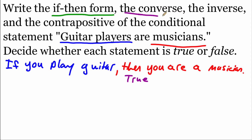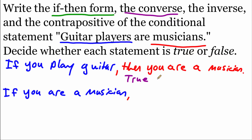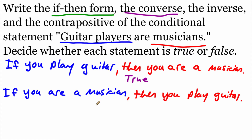For the converse, we switch the if and then pieces around, changing the order. So we would say: if you are a musician, then you play guitar. Is this true or false? If you're a musician, do you have to play guitar? No — there are a bunch of different instruments out there, so being a musician doesn't automatically mean you play guitar.